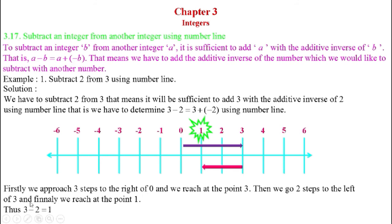Firstly, we approach three steps to the right of 0 and we reach at the point 3. Then we go another two steps to the left of 3, and finally we reach at the point 1. Thus, 3 minus 2 equals 1.